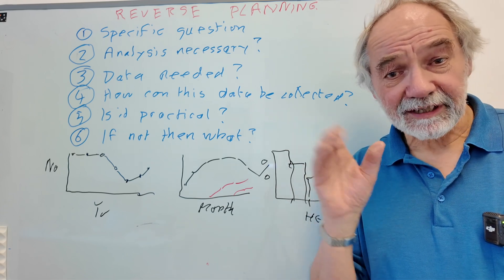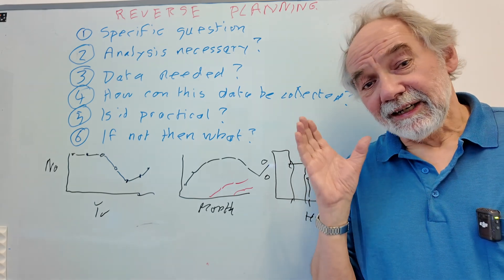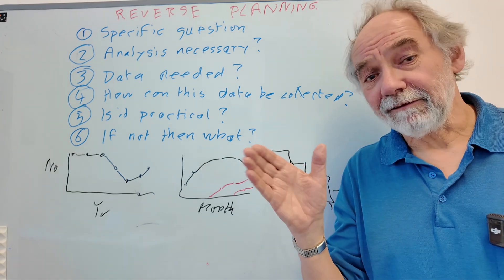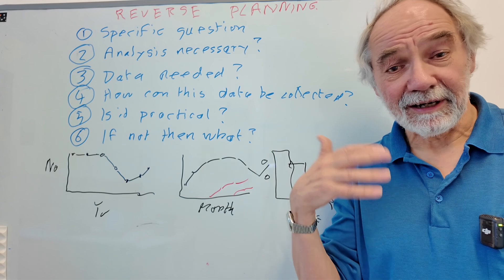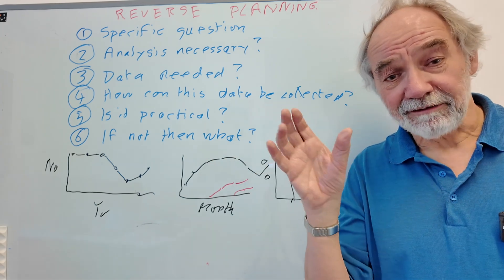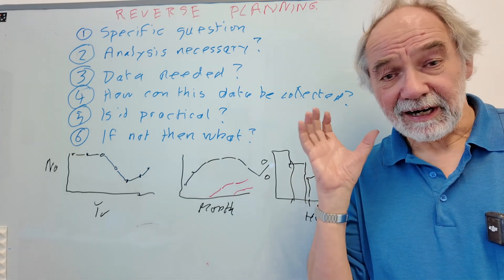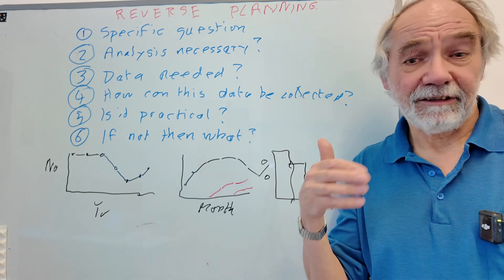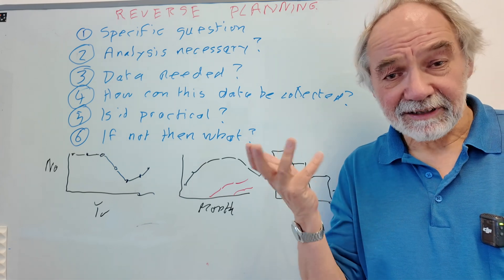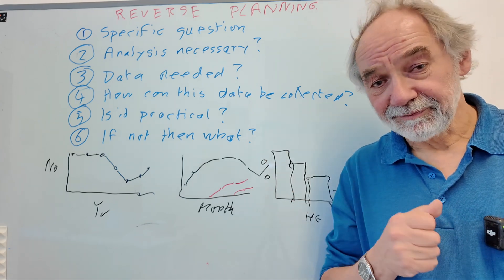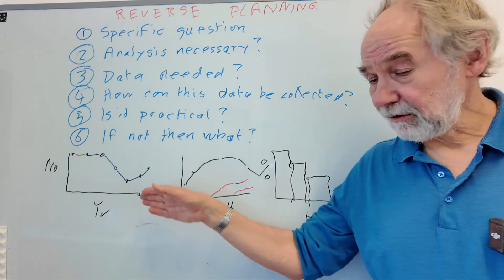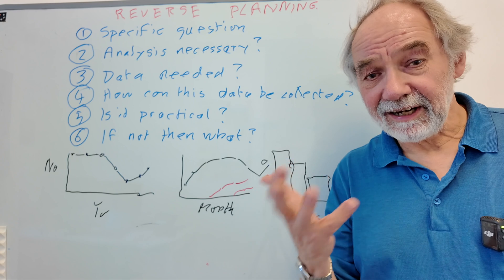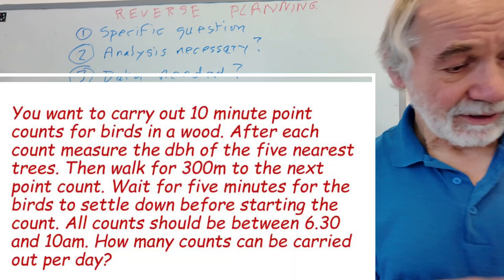And the way to do this is to think about how long your season is. So how many months it is. And then each month, how many days are you going to spend working? You know, hopefully you're not going to work every day. You might have the weekends off. You might have to travel between sites. You might have other things you have to do. You'll have days when the weather isn't suitable. So you've got to be realistic about the number of days that you could actually work. And then you think about how long it would take to do each of these exercises.